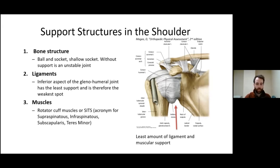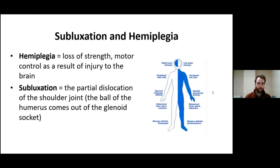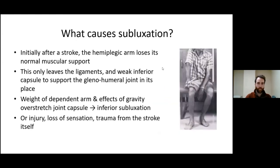What exactly is subluxation in hemiplegia? Hemiplegia is the loss of strength or motor control as a result of injury to the brain, and subluxation is the partial dislocation of the shoulder joint — the ball of the humerus comes out of the glenoid socket. During the initial period after a stroke the hemiplegic arm loses normal muscular support, leaving the shoulder supported only by that weak inferior capsule and ligaments. Without muscular support, the weight of the arm alone can stretch that joint capsule and cause inferior subluxation. This is why it is so prevalent.